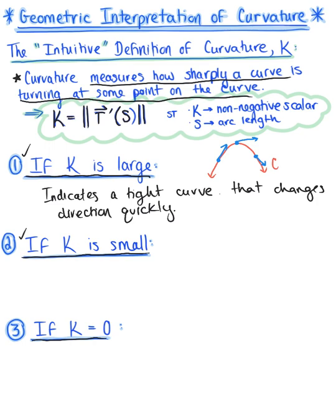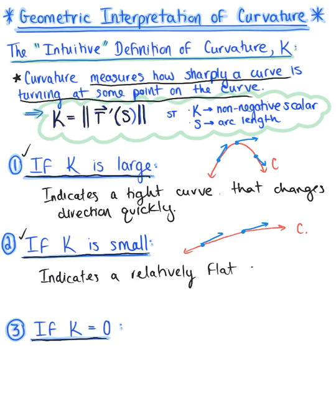Case number two: if our curvature kappa is measured to be a small non-negative scalar, this implies that the curve is a relatively flat curve and it changes direction slowly. For any point on the curve, the unit tangent vector is changing direction relatively slowly. A small curvature indicates a relatively flat curve that changes direction slowly.